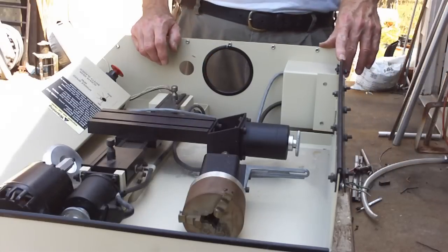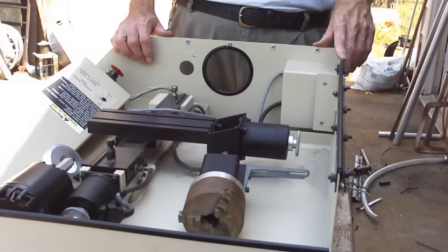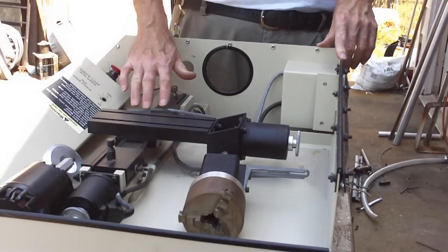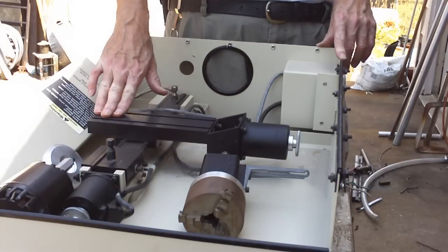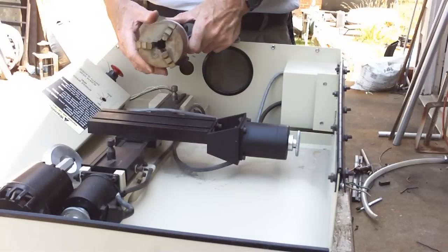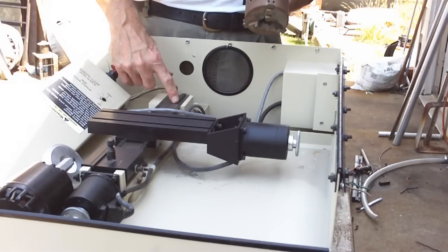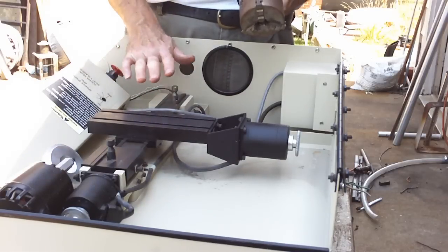This machine is a mill and a lathe. I thought I'd show how the lathe part fits in here. Now here's the ways and the cross slide. This is the spindle bearing. It fits on this pin and there's a keyway there to lock it straight along the bed.